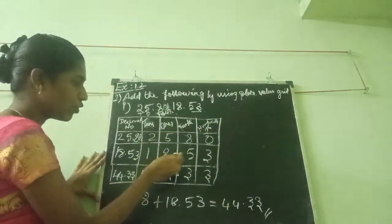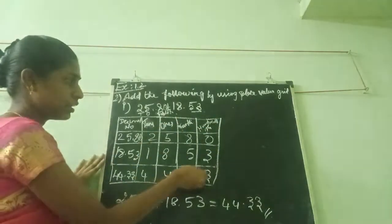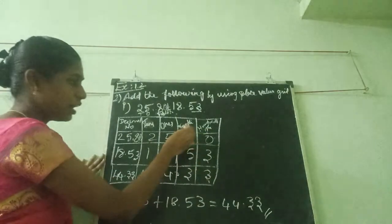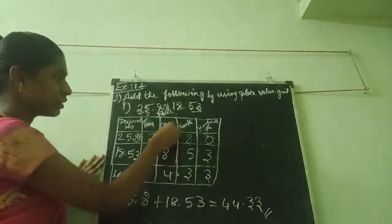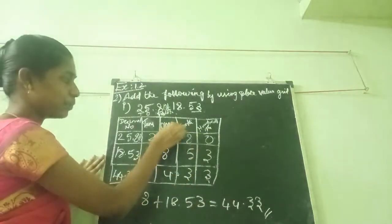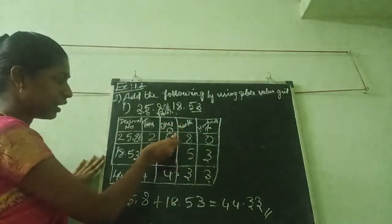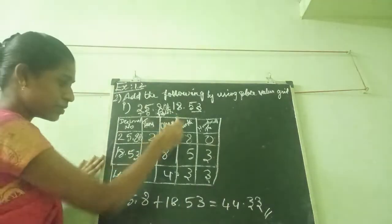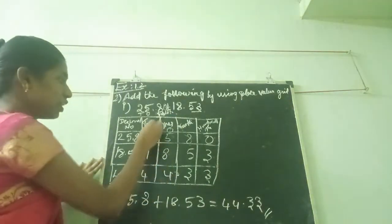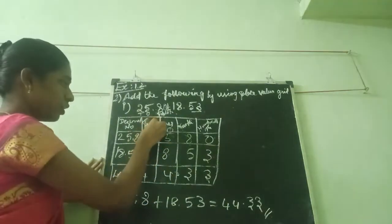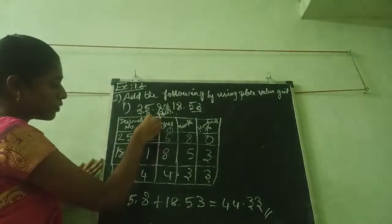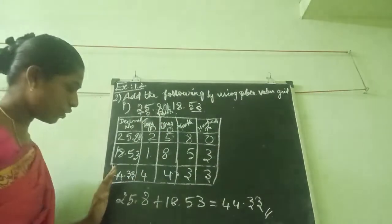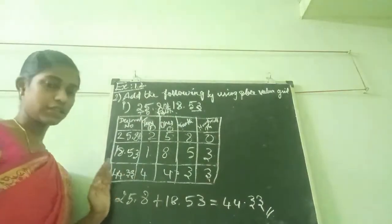Like that I am putting. This one we want to add. That means 0 plus 3 is 3; 8 plus 5 is 13, write 3 carry 1; then 8 plus 5 is 13, plus 1 carry is 14, write 4 carry 1; then 2 plus 1 is 3, plus 1 is 4. The answer is 44.33.